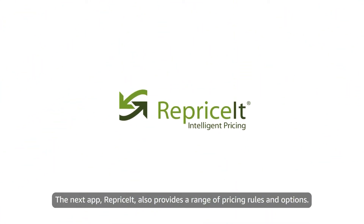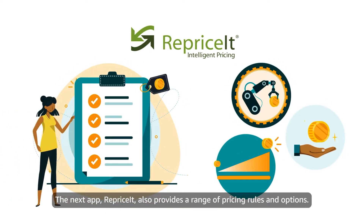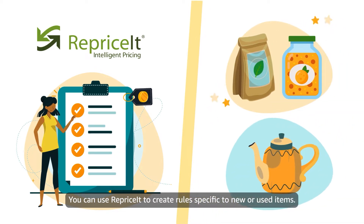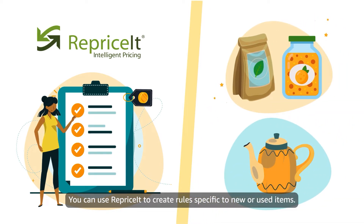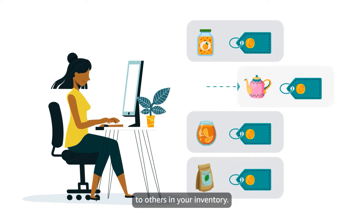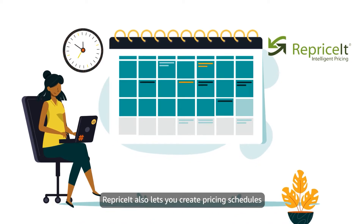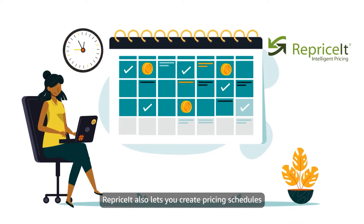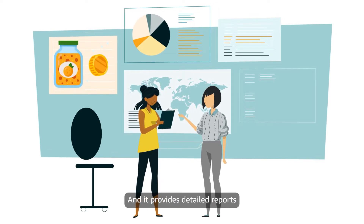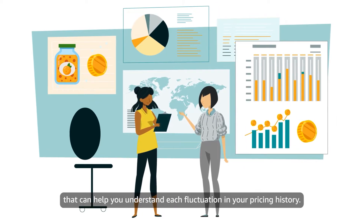The next app, Reprice It, also provides a range of pricing rules and options. You can use Reprice It to create rules specific to new or used items, or you can quickly exclude a product from a rule applied to others in your inventory. Reprice It also lets you create pricing schedules for Amazon shopping events. And it provides detailed reports that can help you understand each fluctuation in your pricing history.